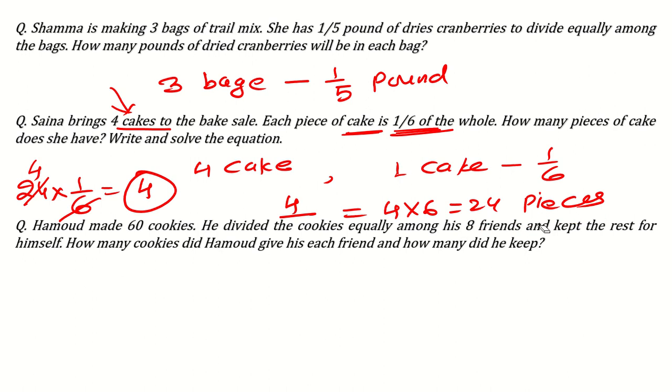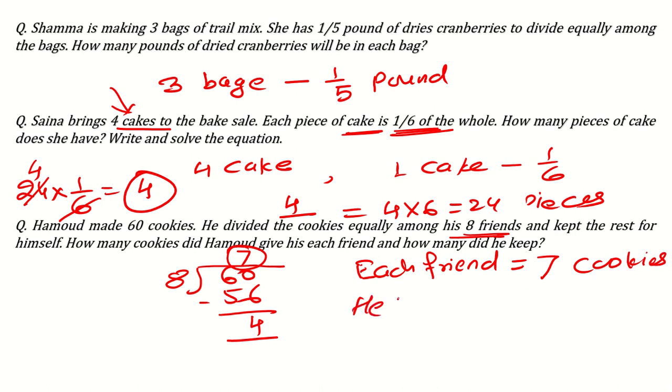Next can be: Hamoud makes 60 cookies. He divided the cookies equally among his 8 friends and kept the rest for himself. How many cookies did Hamoud give his each friend and how many did he keep? This is a simple question of division. See, total he has 60 and how many friends he has? 8. So just divide it by 8. So it will be 8 times 7, 56. Remainder is 4. So each friend got that quotient. Each friend got 7 cookies and he kept for him that remainder, 4 cookies. Like this, you can get the answer.